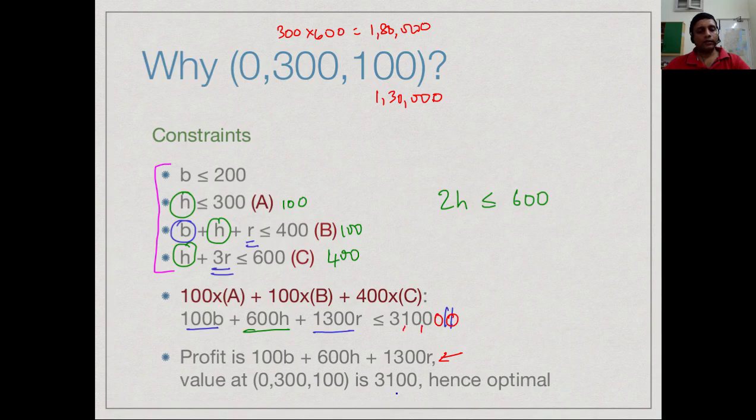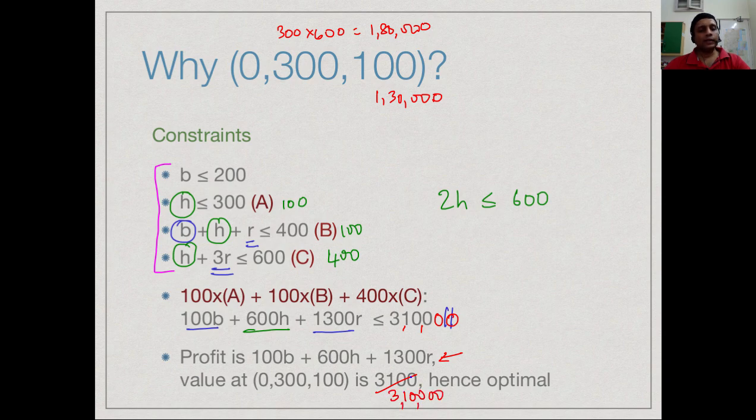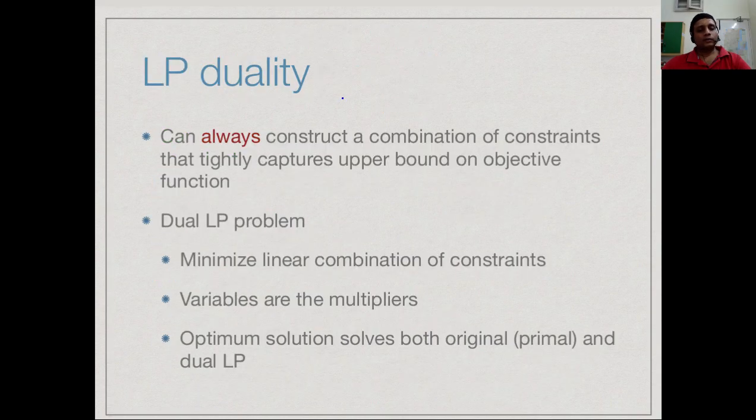In other words, this is actually the optimum profit, because from our constraints, we can derive the fact that we cannot get anything more than this. Hence, this must be an optimum value. In this particular example, it seems that we can prove to ourselves that we have achieved an optimum by just doing something clever with the constraints.